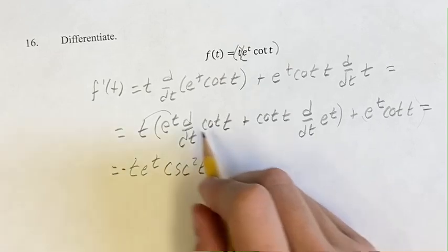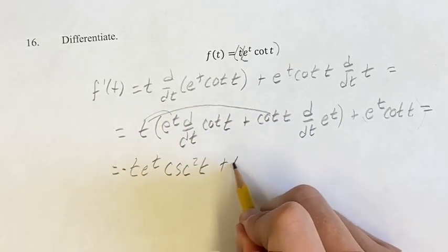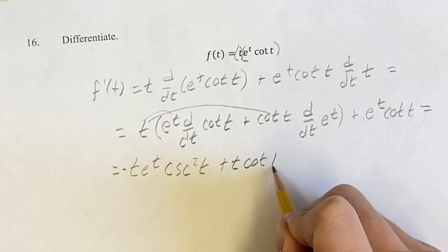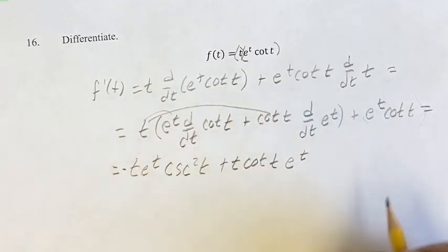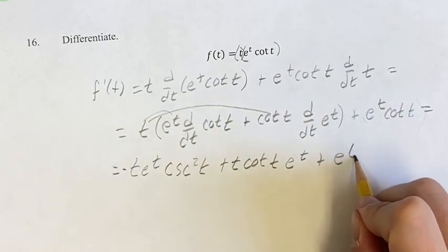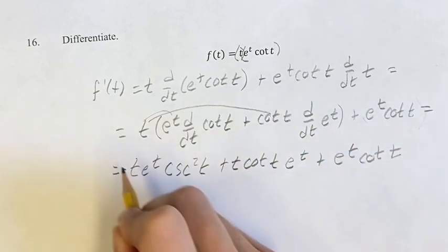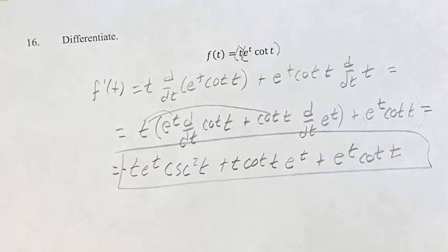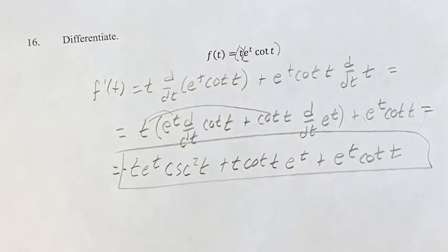This is plus t cot(t). The derivative of e^t is just e^t. And then this is plus this last term here, plus e^t cot(t). This is your derivative. As always, thank you for liking and subscribing, and I'll see you in the next video.